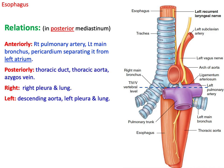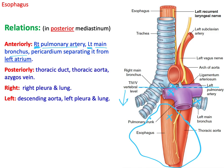Below the sternal angle line, between T4 and T5, we enter the posterior mediastinum. Here, the esophagus is anteriorly related to the right pulmonary artery and left main bronchus. Going a little further down, it is related to the pericardium and heart.